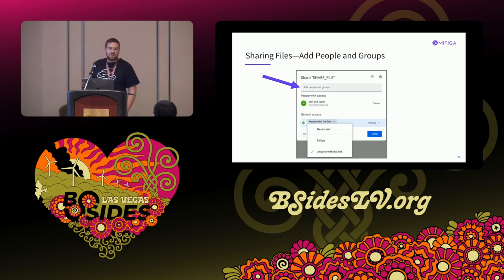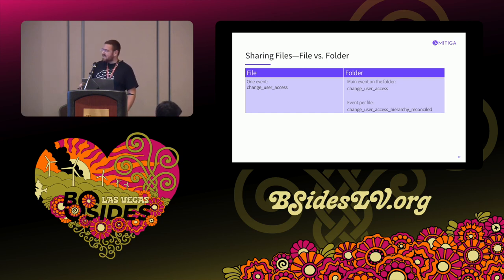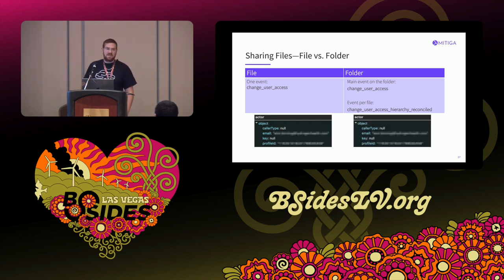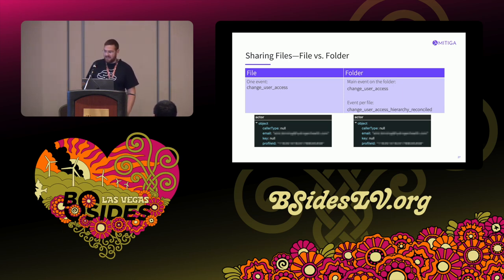When you share a file with a concrete principal, it's straightforward: there is one event called change user access, and the actor is the user who performed it. But when you share a folder with a concrete principal, something interesting happens. For the main folder, there is one change user access event where the actor is the user. But for each file and folder recursively under the main folder, there is a special event called change user access hierarchy reconciled, and the actor of these events is system. All of these are primary events, not part of a chain.